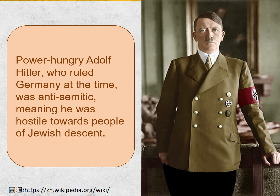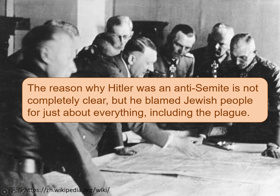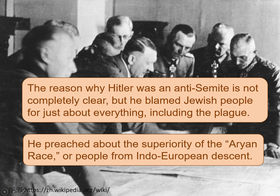Power-hungry Adolf Hitler, who ruled Germany at the time, was anti-Semitic, meaning he was hostile towards people of Jewish descent. The reason why Hitler was an anti-Semite is not completely clear, but he blamed Jewish people for just about everything, including the plague. He preached about the superiority of the Aryan race, or people from Indo-European descent.